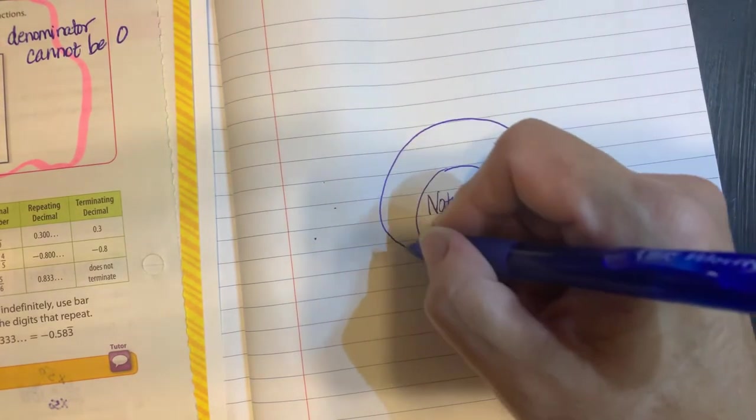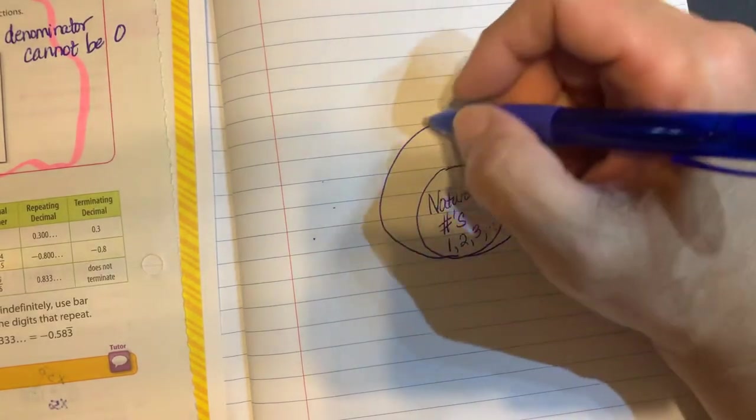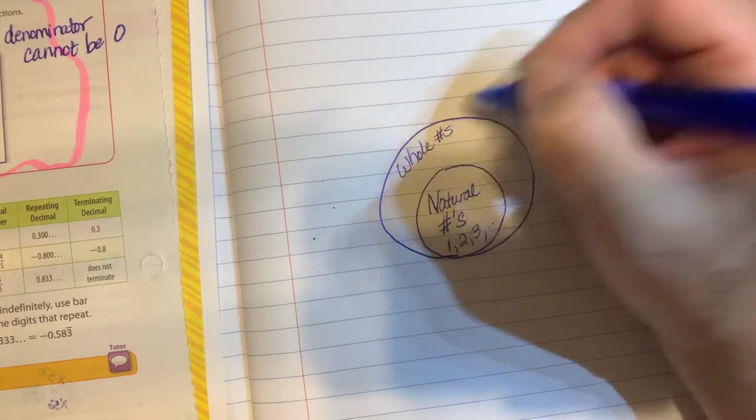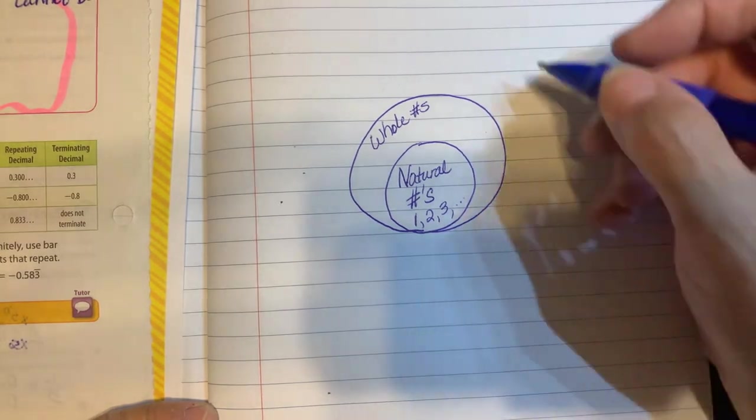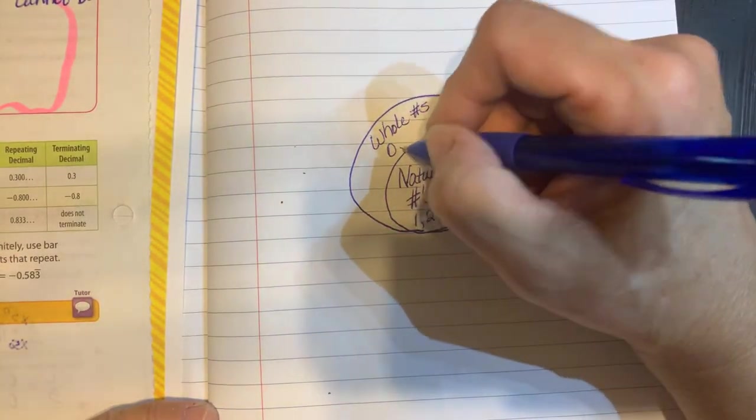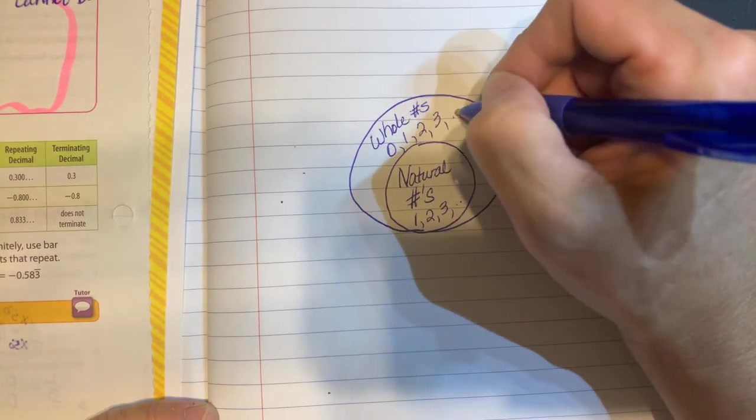Then our next group, we're going to pick up some more people in our next group. I like to do it like this to show that we're going to include this and then we're going to get some more. This next group is going to be our whole numbers. Our whole numbers, we're going to have our natural numbers, our counting numbers, one, two, three, four, and so on, but we're going to add zero. So we're adding zero and then one, two, three, dot dot dot.